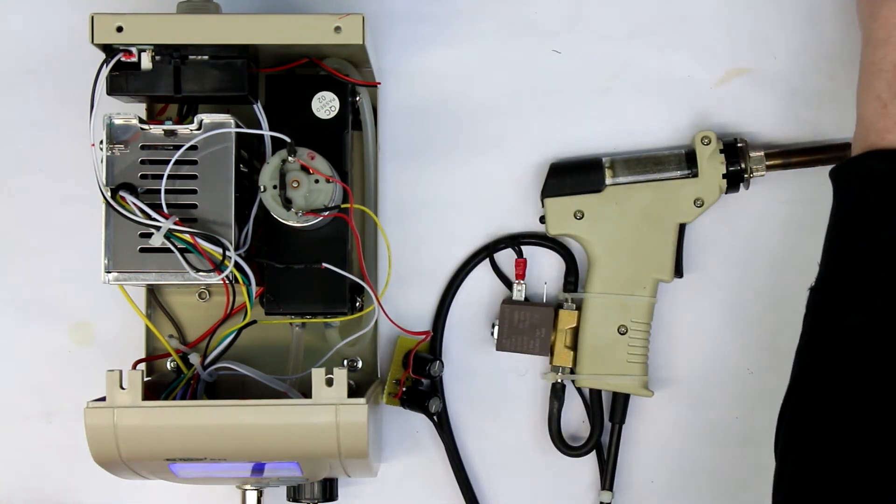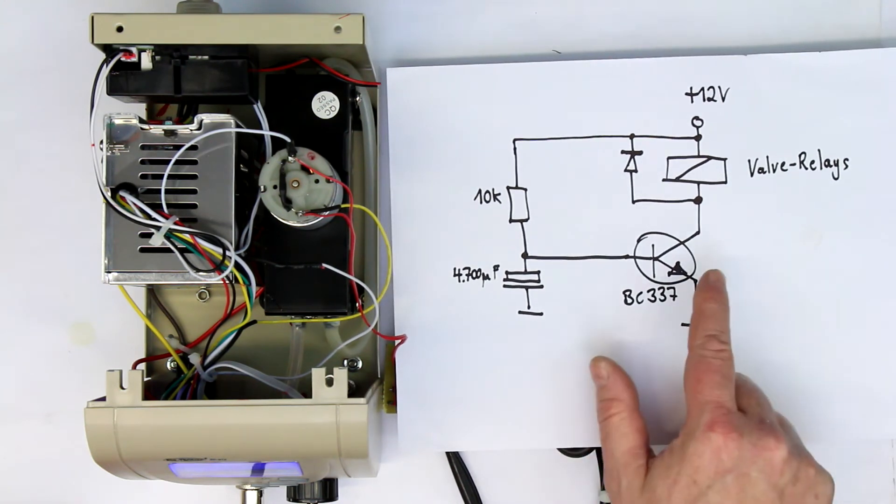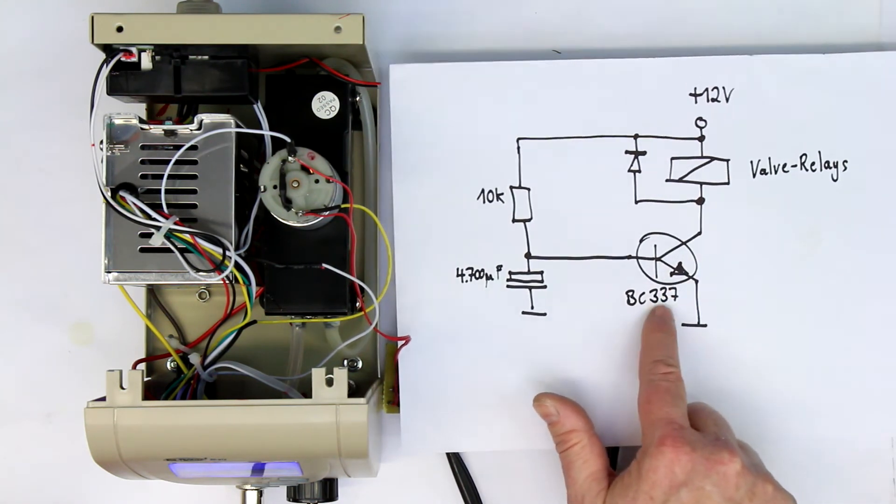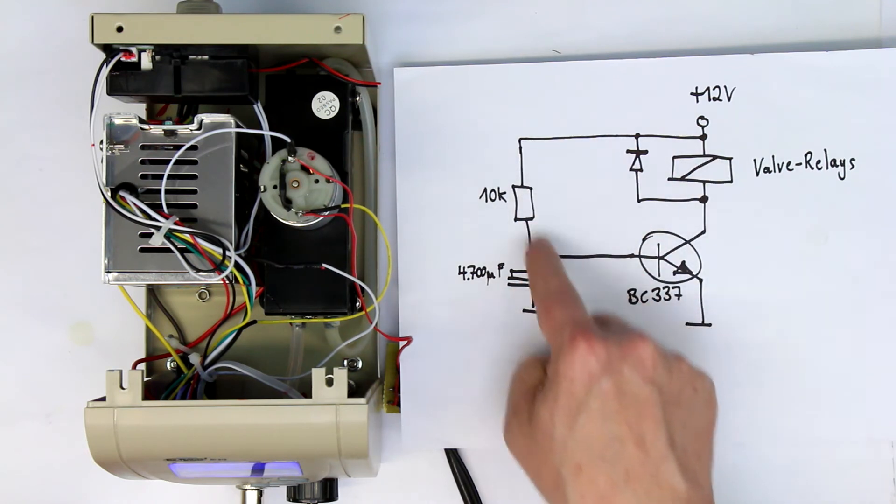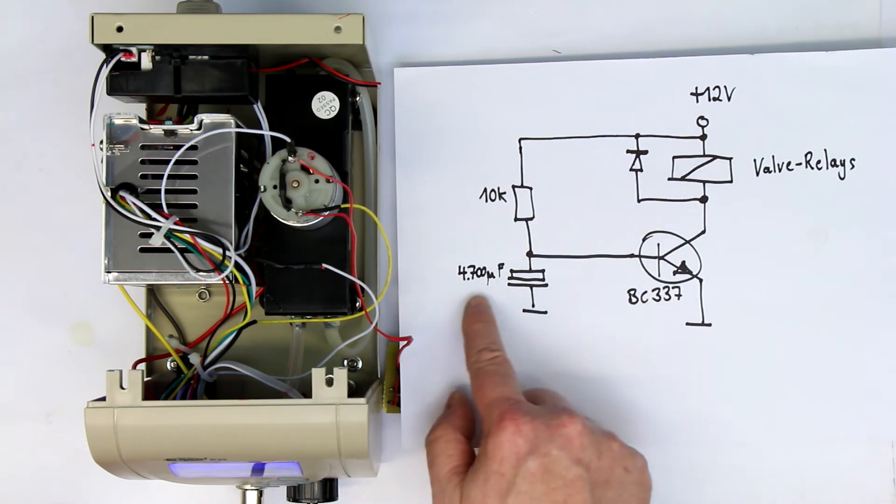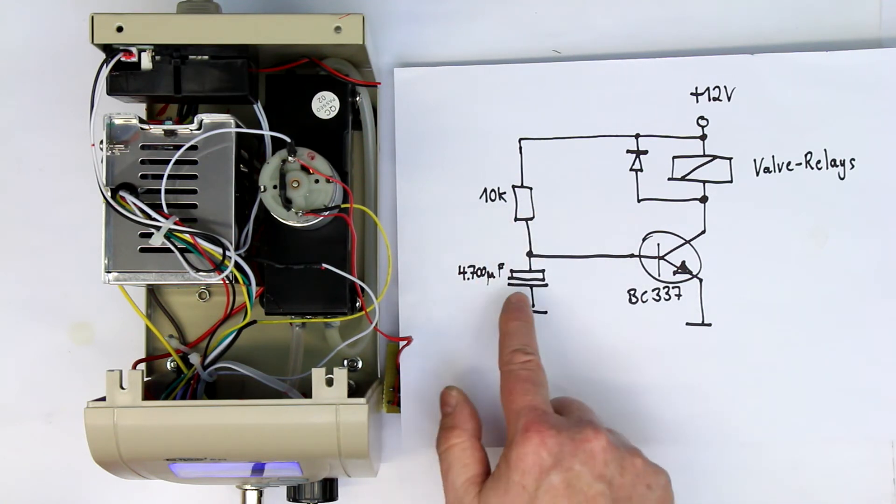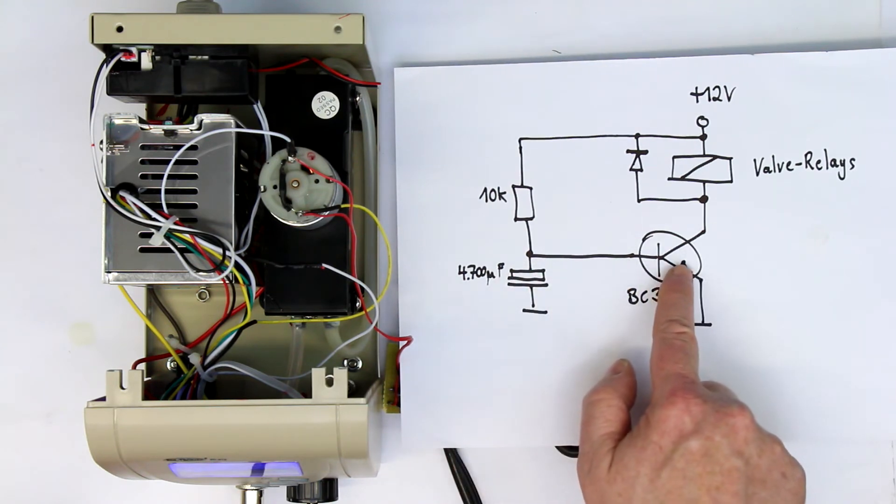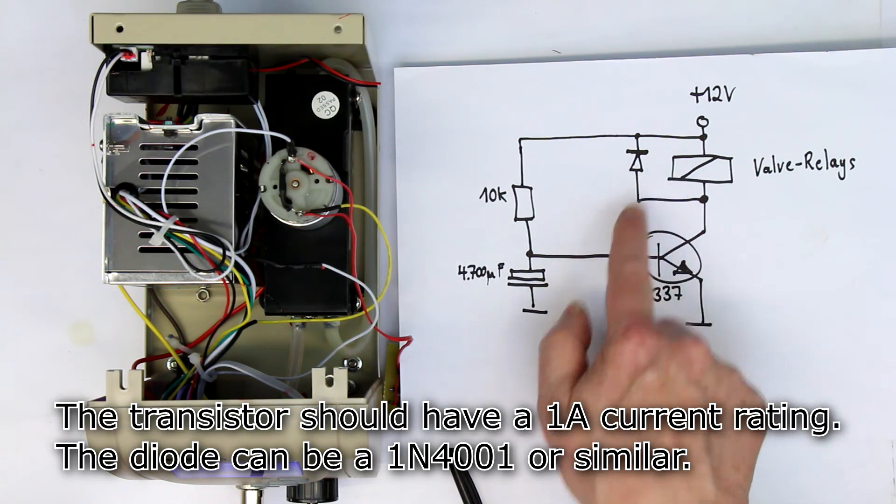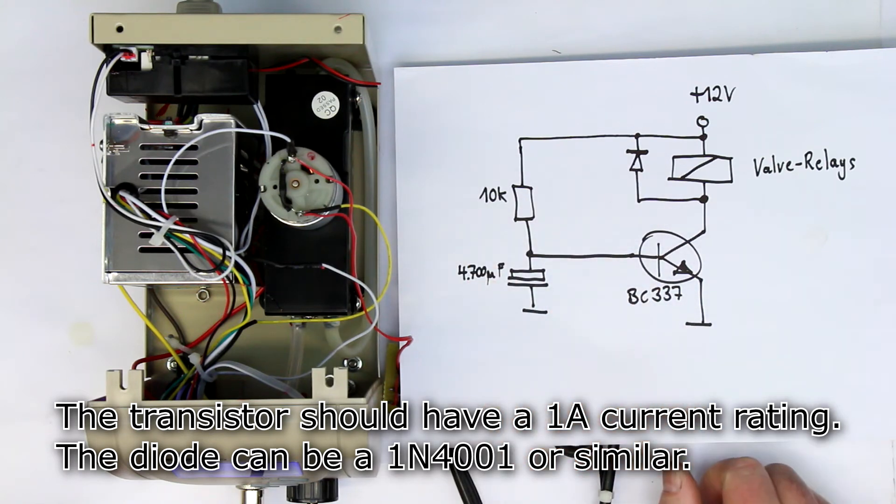And the delay circuit is very simple. It's not textbook-like because the transistor, the switching transistor, does not set on hardly as it should do as a switching transistor. It just works by slowly charging up a 4700 microfarads electrolytic with a 10k resistor. And when 0.6 or 0.7 volts are reached, the transistor will switch on. And the only other component is the back EMF protection diode here. And that is all.